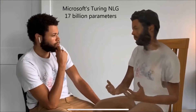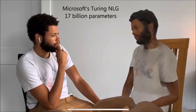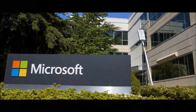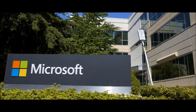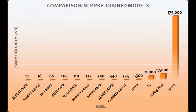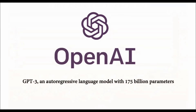Prior to the release of GPT-3, the largest language model was Microsoft Turing NLG, introduced in February 2020 with a capacity of 17 billion parameters. GPT-3 comes with 175 billion parameters, and because of these many parameters, GPT-3 is clearly a game changer in the field of AI and machine learning.